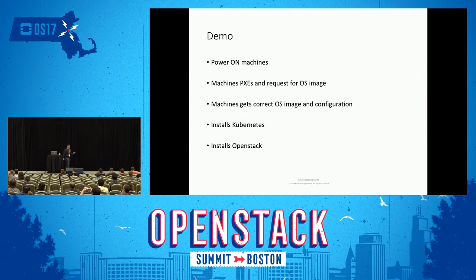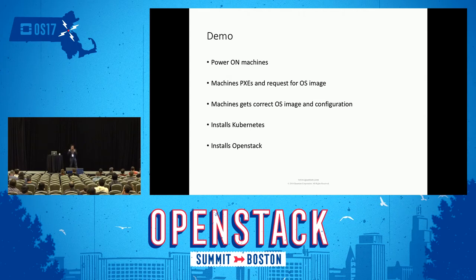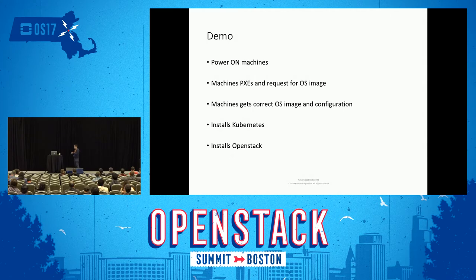While I was doing that, let me switch back to my presentation and give you a summary of what the demo is going to do. It's going to power on the machines, which I just did. Once the machines are powered on and get an IP from DHCP, they will request an image and get the correct image and configuration. Once the machine is bootstrapped with the OS image, it's going to install Kubernetes - a 3-node Kubernetes cluster. And once the Kubernetes cluster is up and running, it will install OpenStack on top of it.